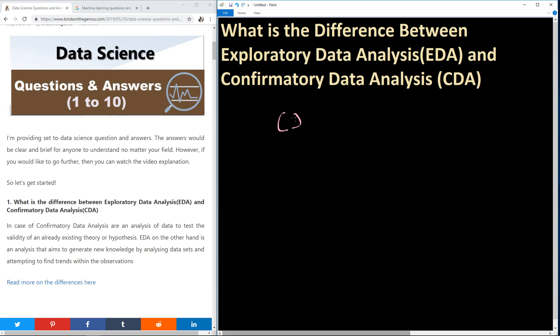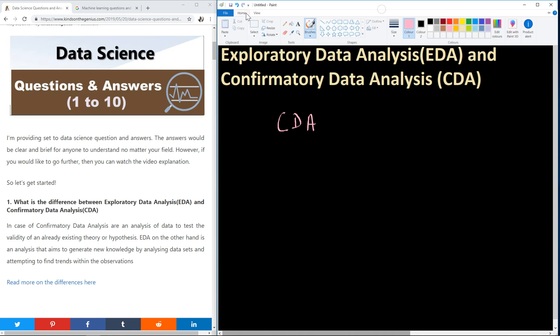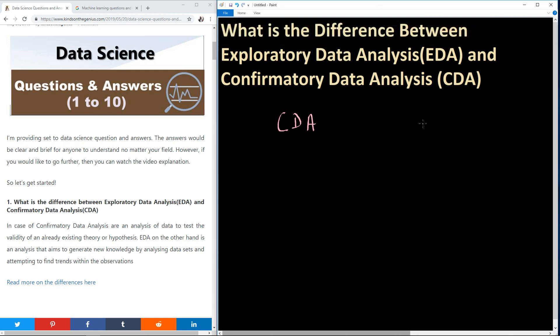We are talking about CDA, Confirmatory Data Analysis, and EDA, Exploratory Data Analysis. What is the difference between the two of them? Already you know that both of them are simply data analysis methods.